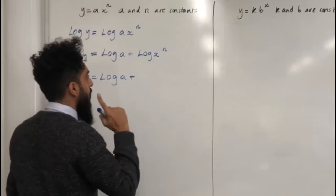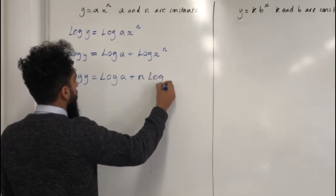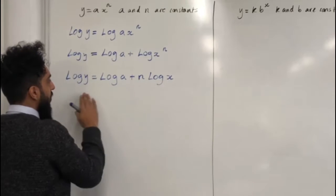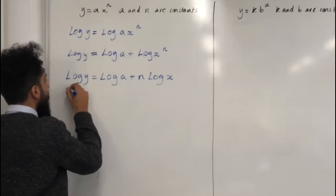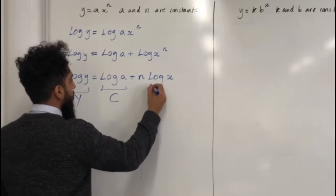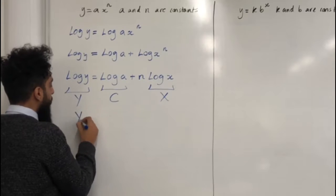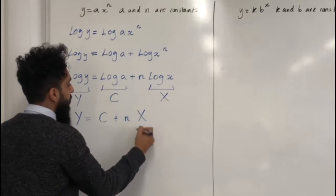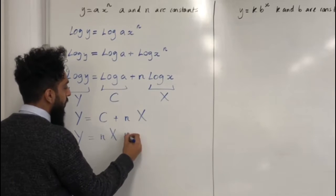Now you can use the power rule for logs to bring down the power n in front of the log — I can write n log x. Now if I use a change of variables, I can rewrite this equation so that it looks like an equation of a straight line. I can call log y capital Y, log a capital C, and log x capital X. So now I've got an equation of the form capital Y is equal to capital C plus n multiplied by capital X, which can be rewritten as n multiplied by capital X plus capital C.